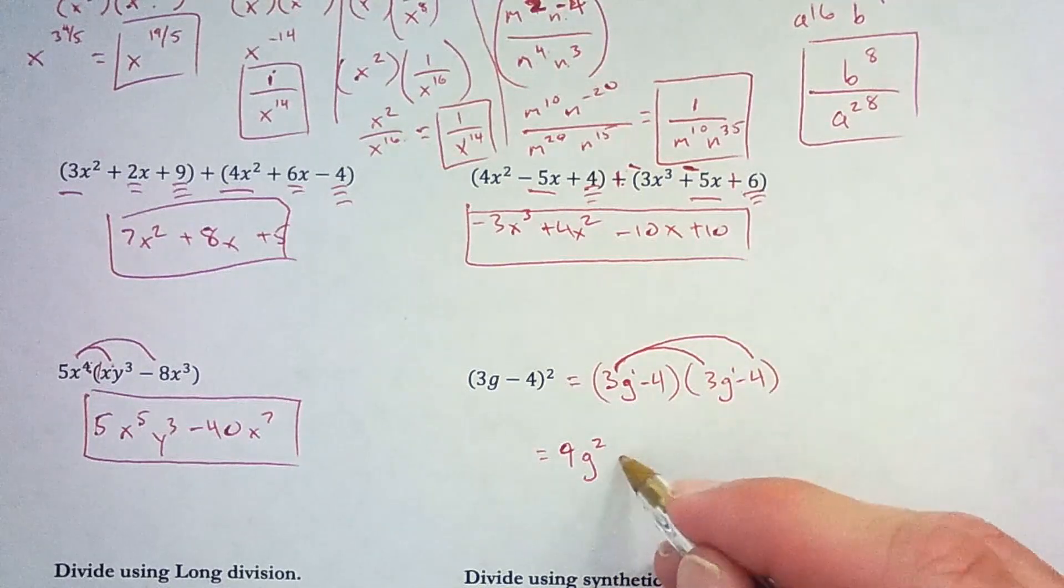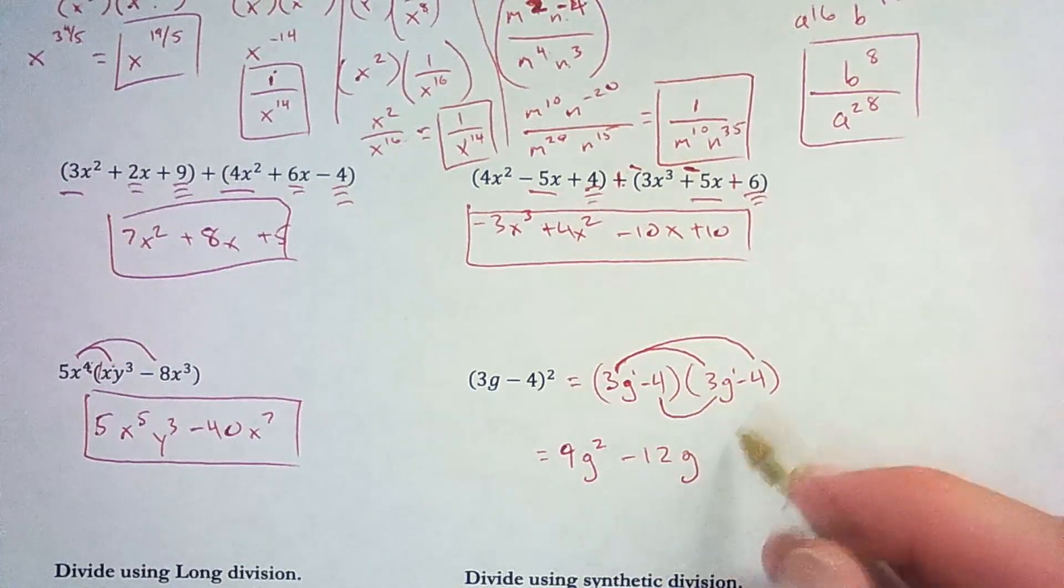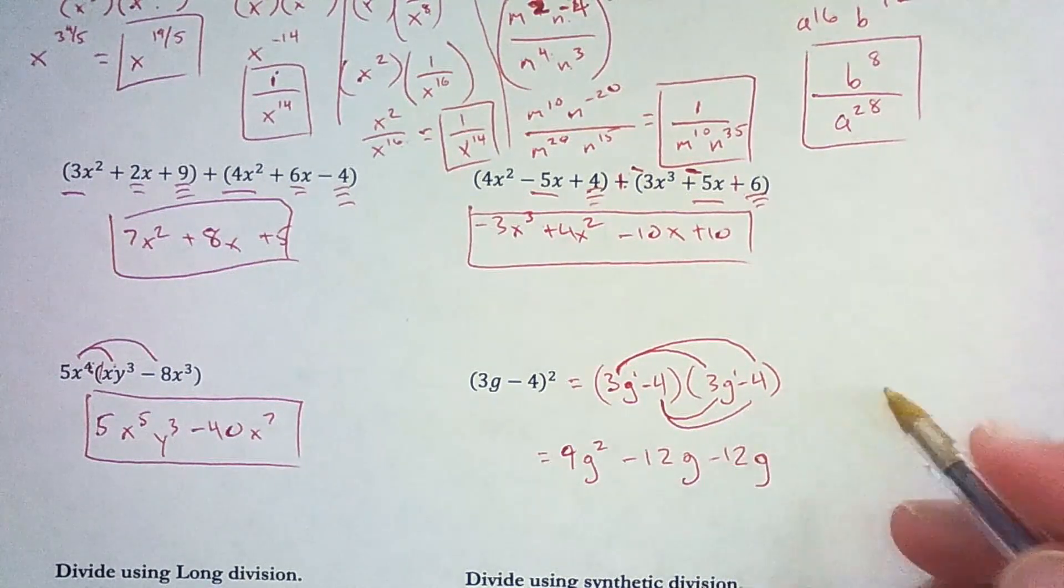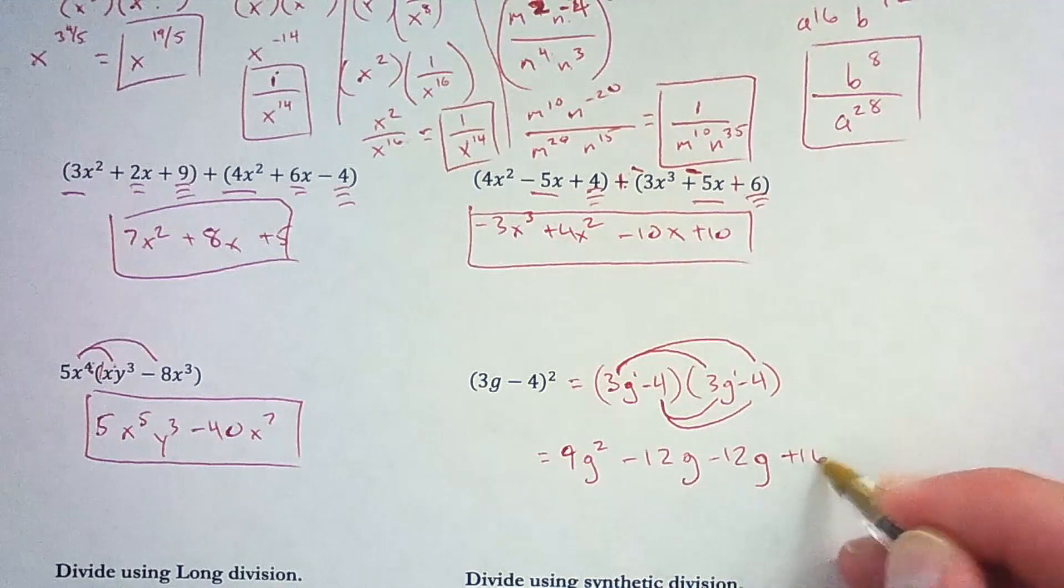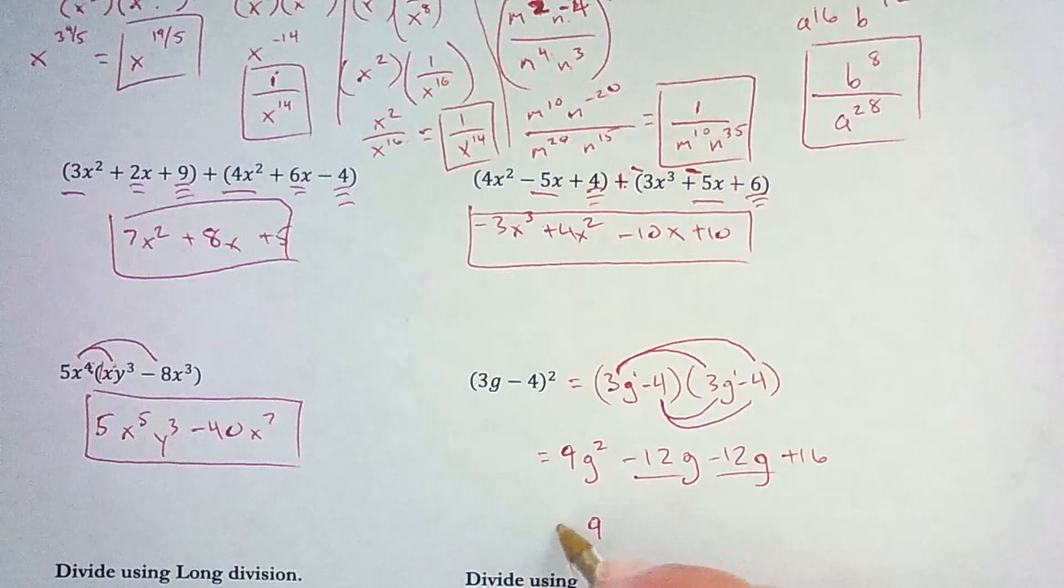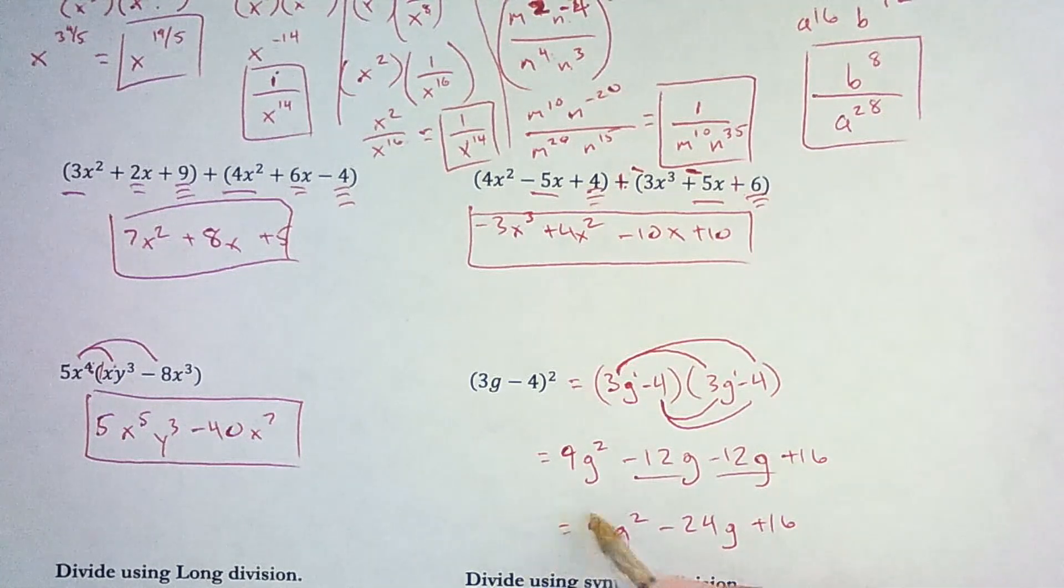3g times negative 4, that's negative 12g. Negative 4 times 3g, that's another negative 12g. And negative 4 times negative 4 is 16. And I can combine these like terms. So that's 9g squared minus 24g plus 16.